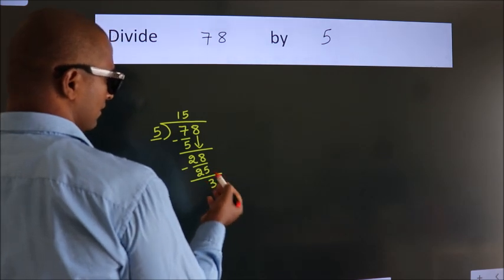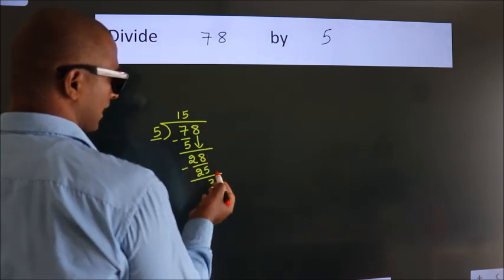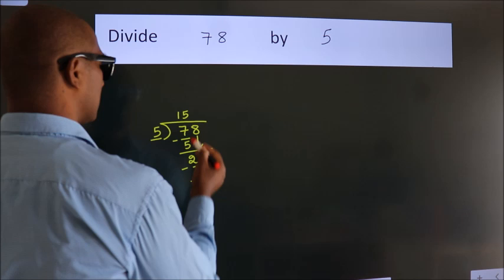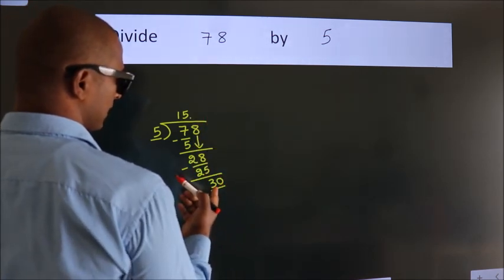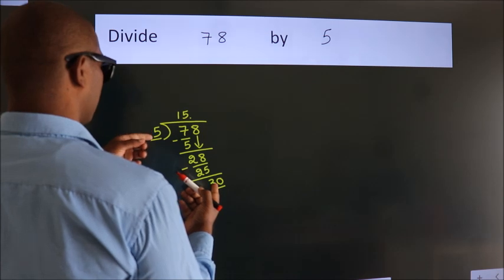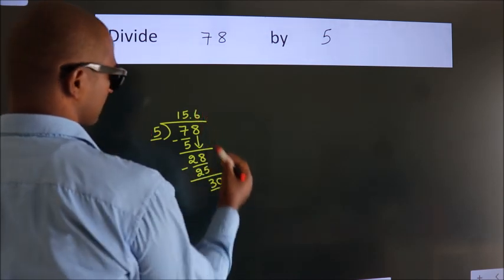After this, no more numbers to bring down. So what we do is we put a dot and take 0. So 30. When do we get 30 in the 5 table? 5 times 6 is 30.